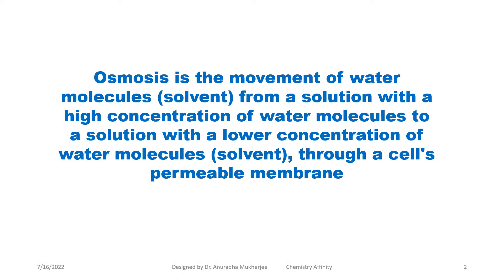Now let's check the definition of osmosis. Osmosis is the movement of water molecules from a solution with a high concentration of water molecules to a solution with a lower concentration of water molecules through a cell's permeable membrane. So that means a cell has a permeable membrane. Now, inside the cell and the outside the cell, if the solvent concentration is different, then solvent will move from the higher concentration to the lower concentration.